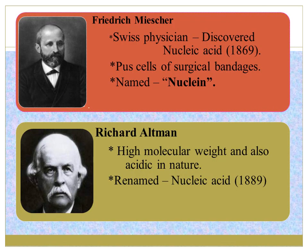Moving on to the history of nucleic acid — Frederic Meischer, a Swiss physician, discovered it in the year 1869. He extracted it from the pus cells of surgical bandages and named it Nuclein, because it was present inside the nucleus. His own scholar, Richard Altman, after 20 years renamed it Nucleic Acid, because he found it had high molecular weight and was acidic in nature.